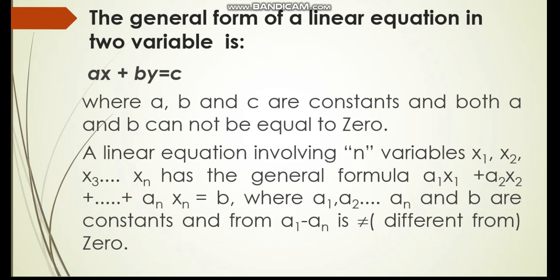Where a1, a2, a3 up to an are coefficients of variables, and b is a constant term. But, starting from a1 up to an must be different from 0. This is the standard forms when any variables are involved in linear equations.